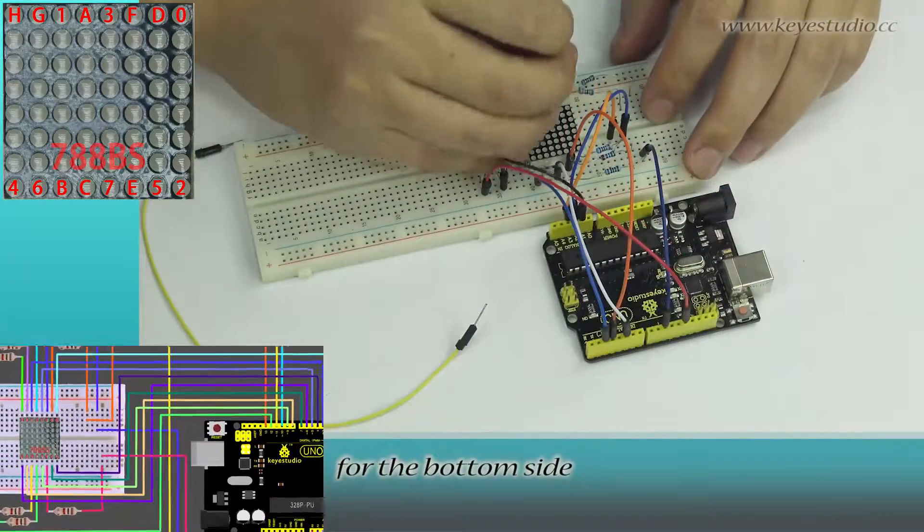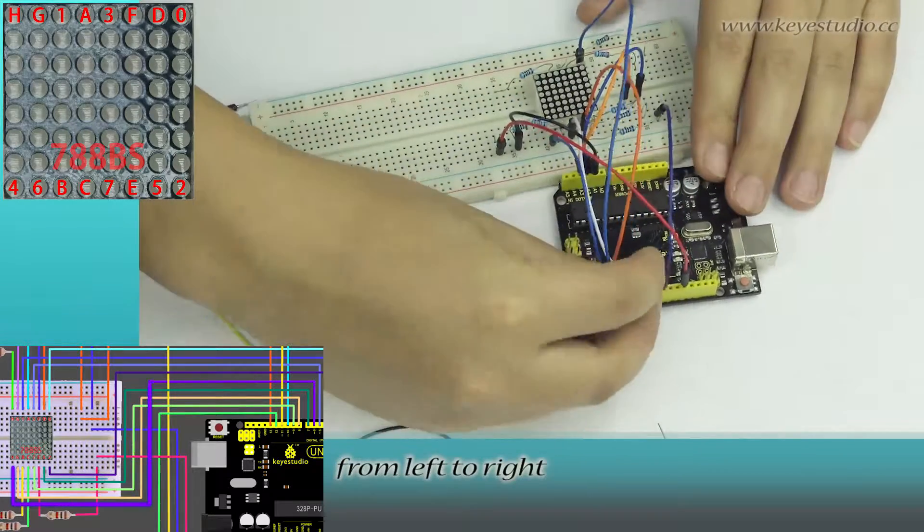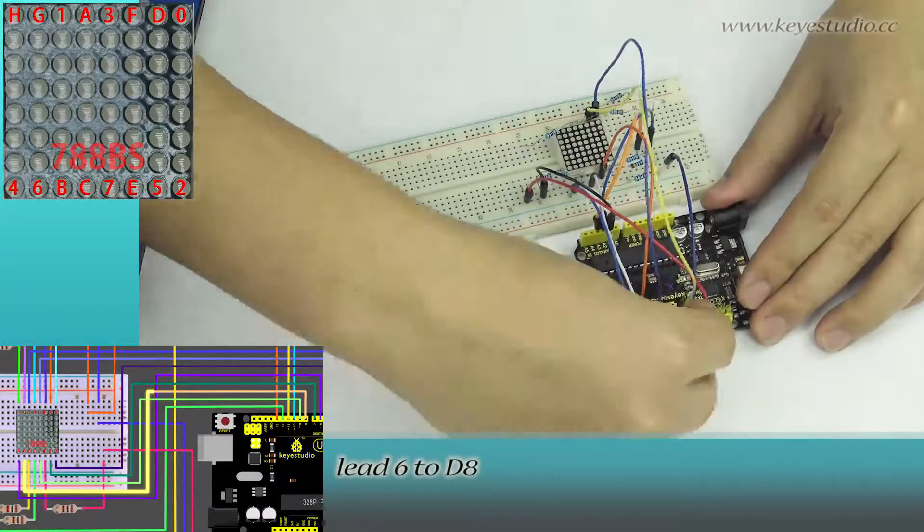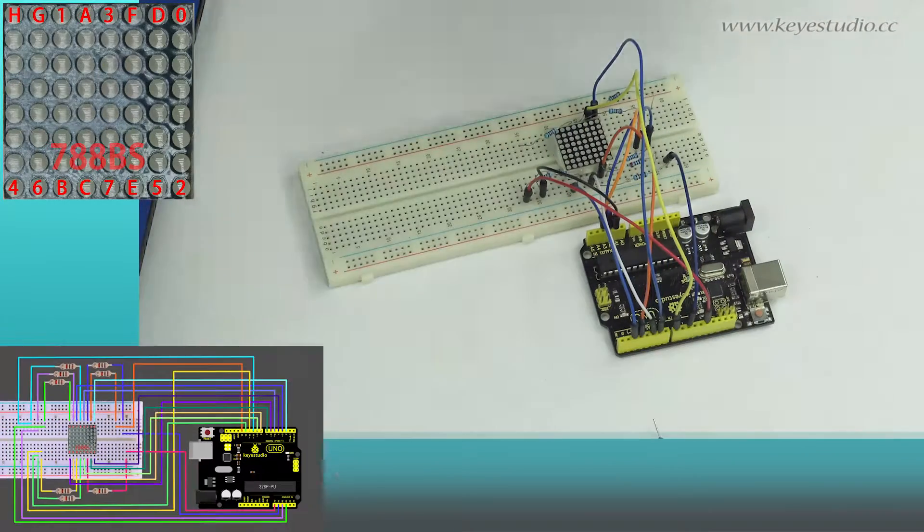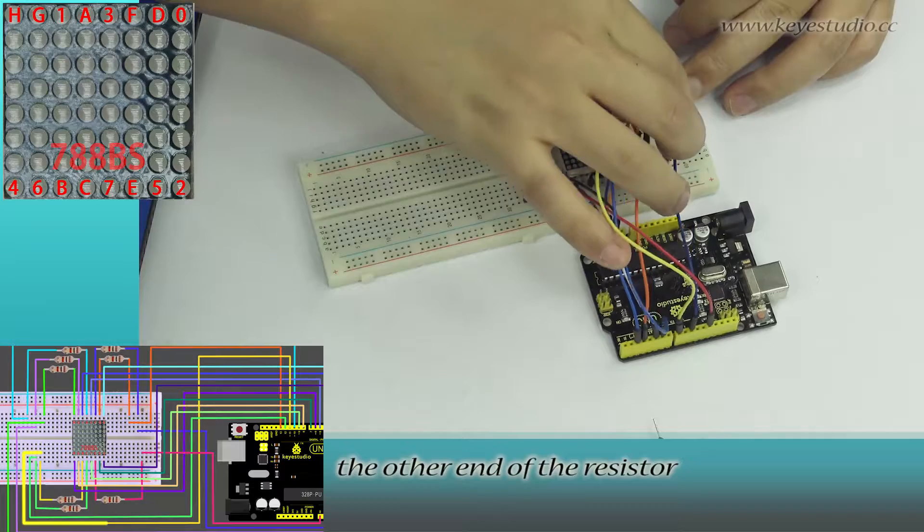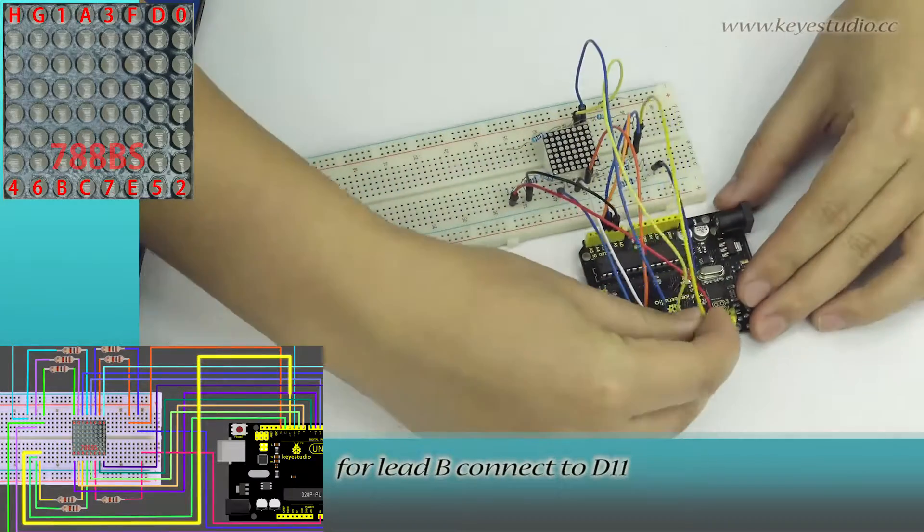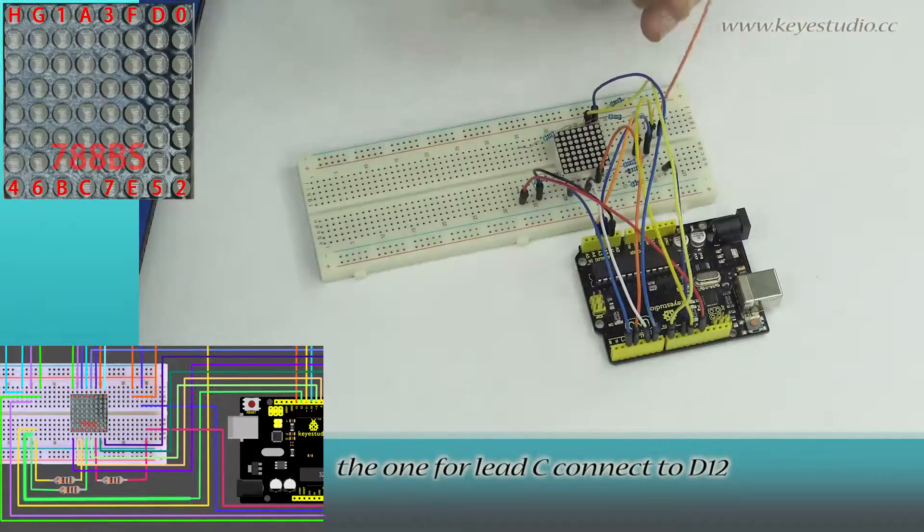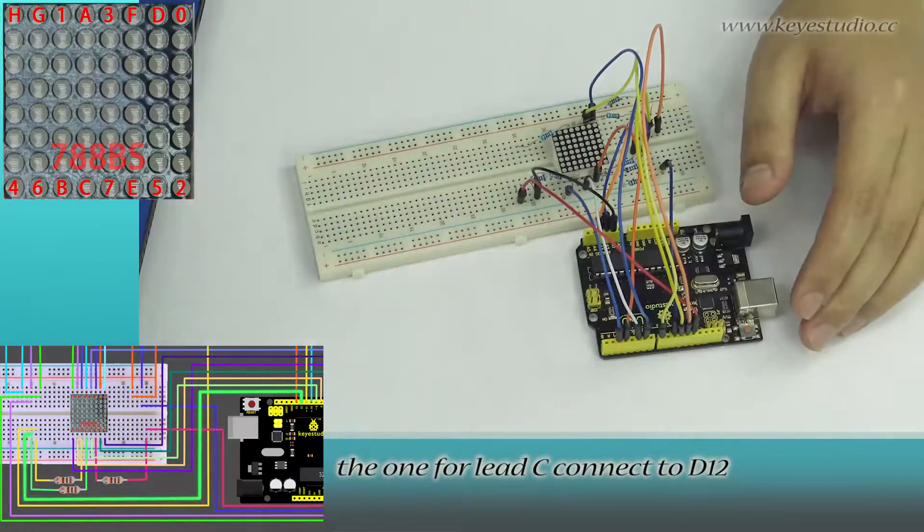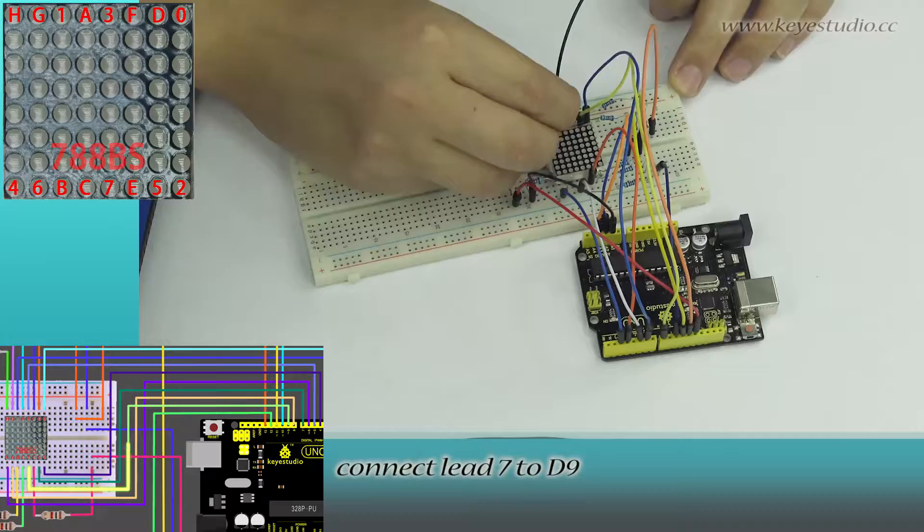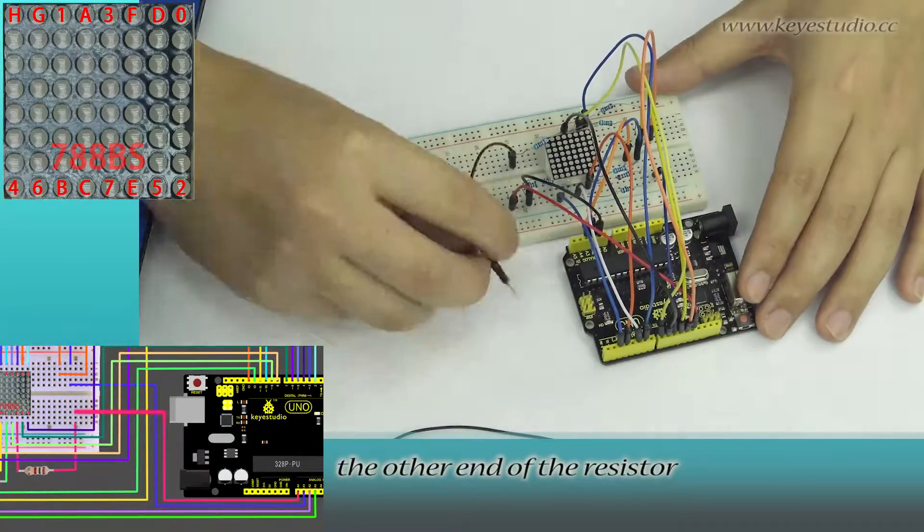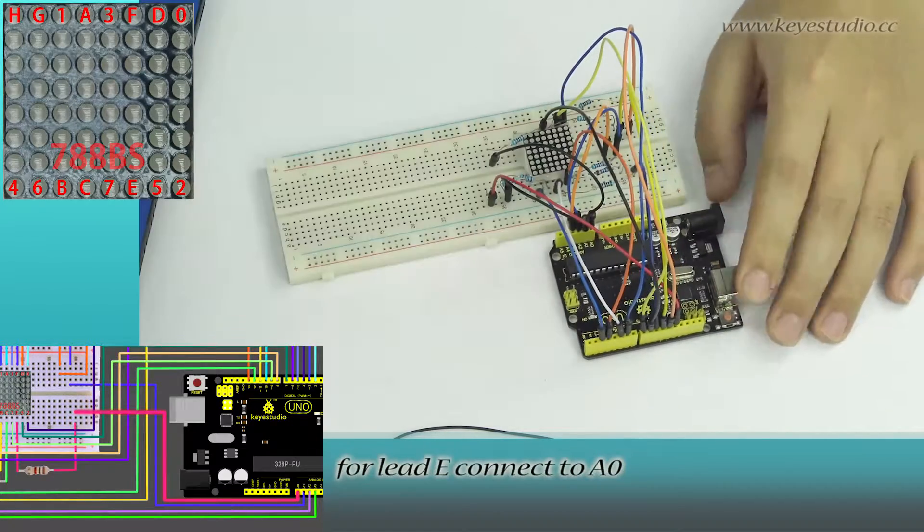For the bottom side from left to right, connect lead 4 to D6, lead 6 to D8. The other end of the resistor for lead E connects to A0. Connect lead 5 to D7, lead 2 to D4.